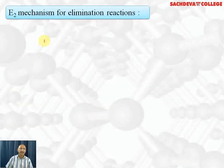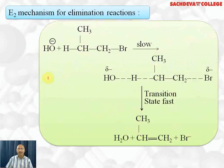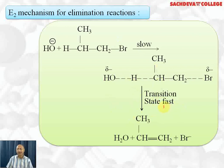Next, let's take up E2 mechanism. With normal propyl bromide reacting with OH⁻, the nucleophile attacks from one side, starting to form a bond and acquiring a delta negative charge, while the carbon-bromine bond begins breaking and bromine acquires a negative charge. This is the transition state — an intermediate state where old bonds are half broken and new bonds are half formed. It is highly unstable. Ultimately, water leaves and BR⁻ leaves, and a double bond forms, resulting in propene.